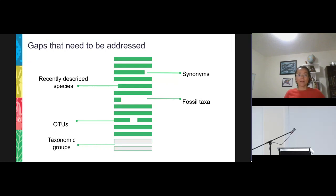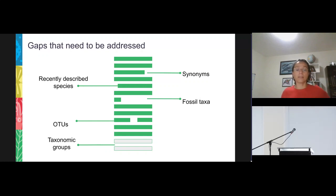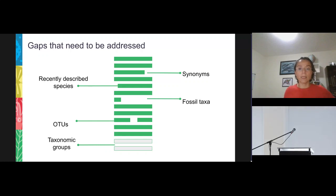Both of these lists have important gaps to cover. They still include gaps around synonyms and name usages, for example, or recently and continually described species that are almost impossible to include as fast as they are published. Also, fossil taxa are not included at all or only in parts. Operational taxonomic units are just beginning to be included in the GBIF backbone, but not in the CoL checklist. We are also dealing with complete taxonomic gaps. That's why we are looking for a more complete list.